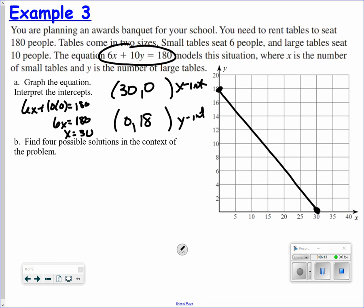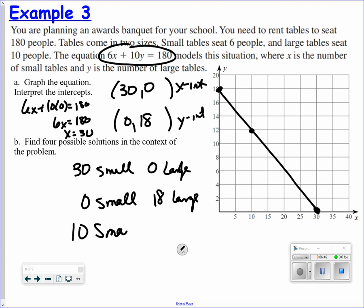So now, what this is saying is I could have 30 small tables and 0 large tables. I could have 0 small tables and 18 large tables. So now, let's get some other scenarios in which this will work for my 180 people. So now, looking at the graph right here, could I have 10 small tables and 12 large tables? Would that fit my 180 people? The answer is yes.